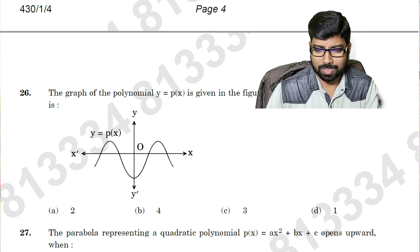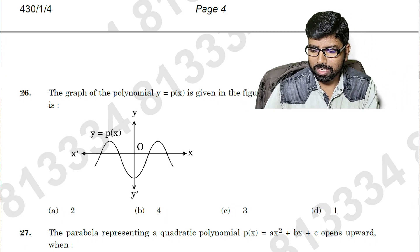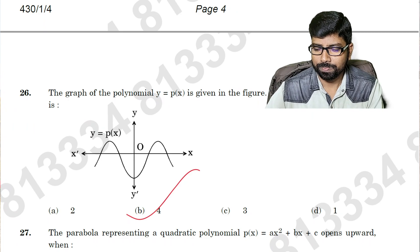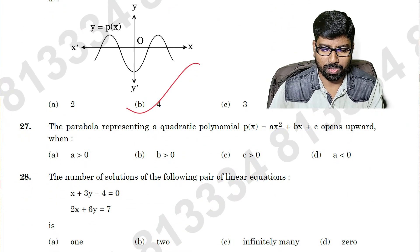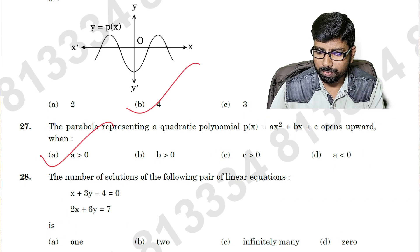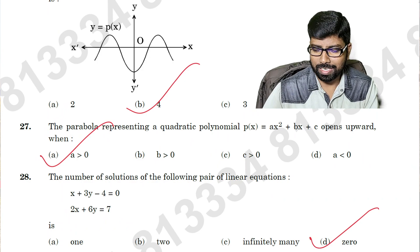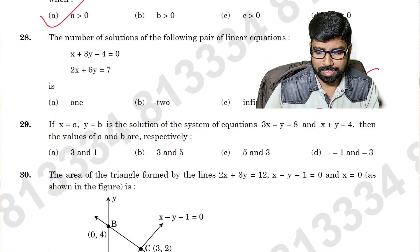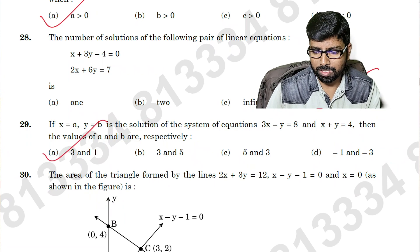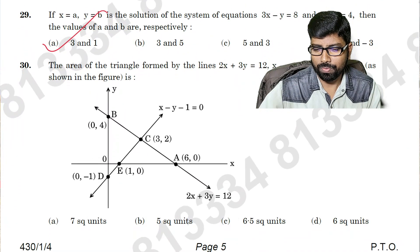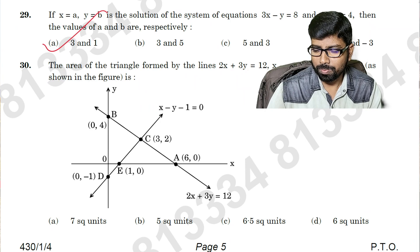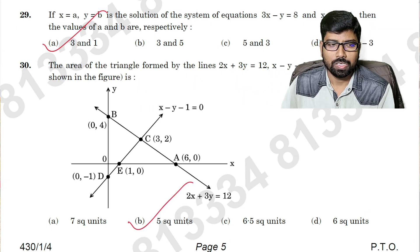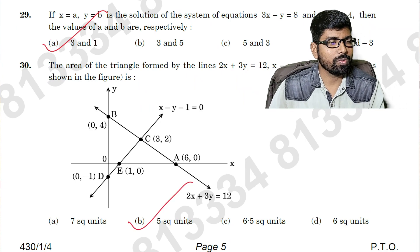Question number 26: option B is the right answer. Question number 27: option A is the right answer. Question number 28: option D is the right answer. Question number 29: option A is the answer. Question number 30: option B is the answer. Quickly note down these answers.